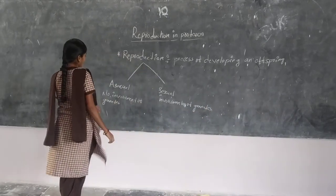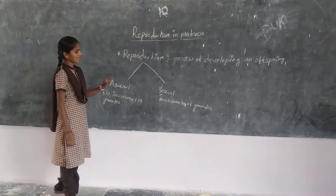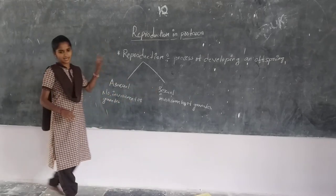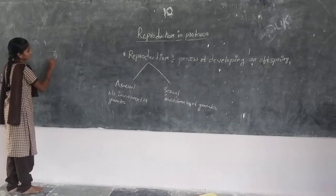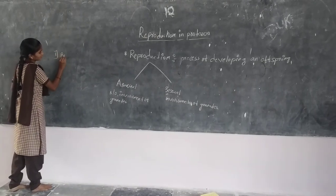Here, in asexual and sexual, again there are five types. Five types in asexual reproduction. First one is binary fission.